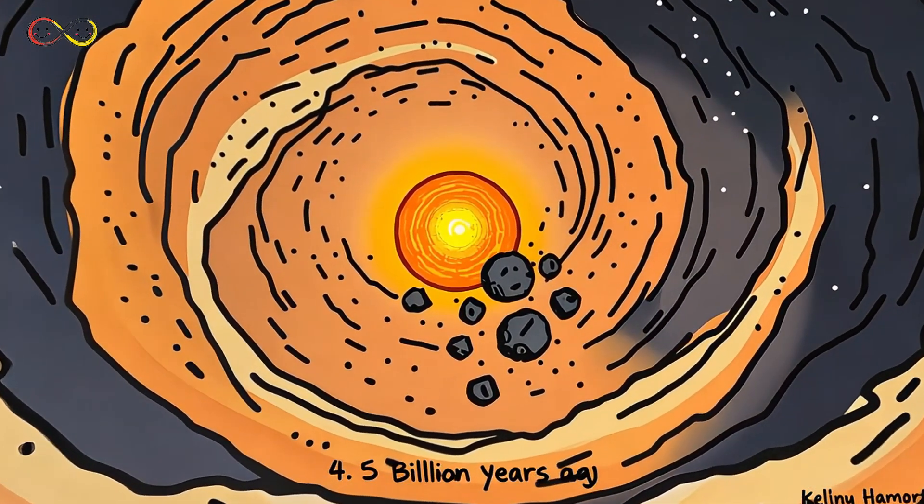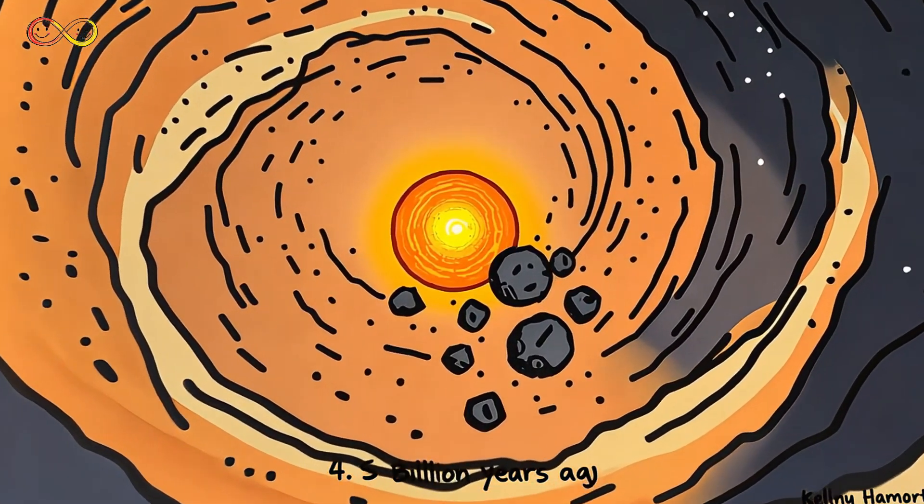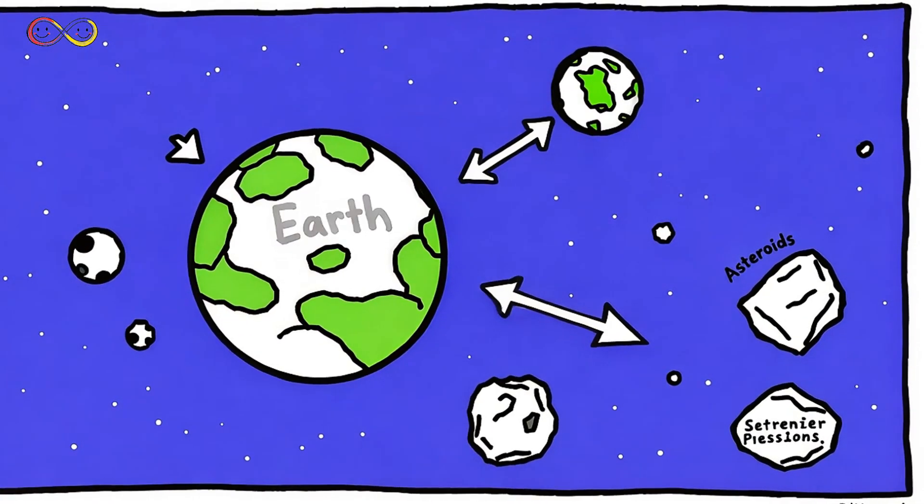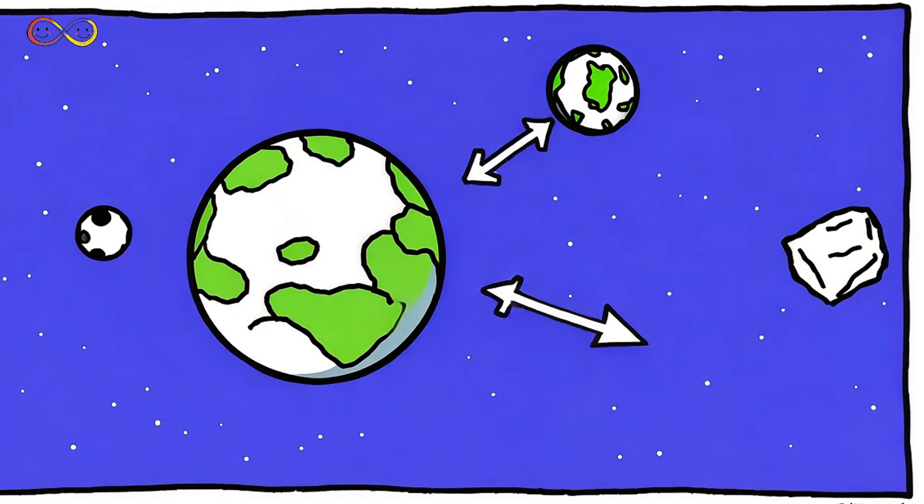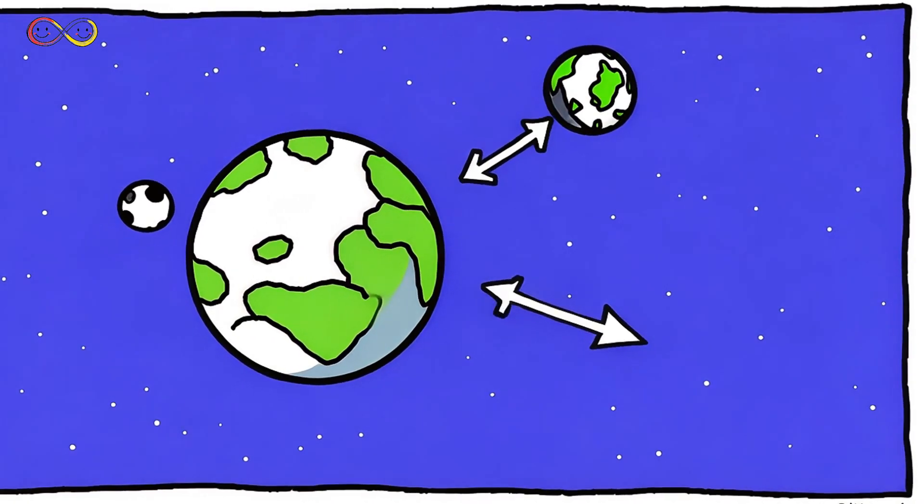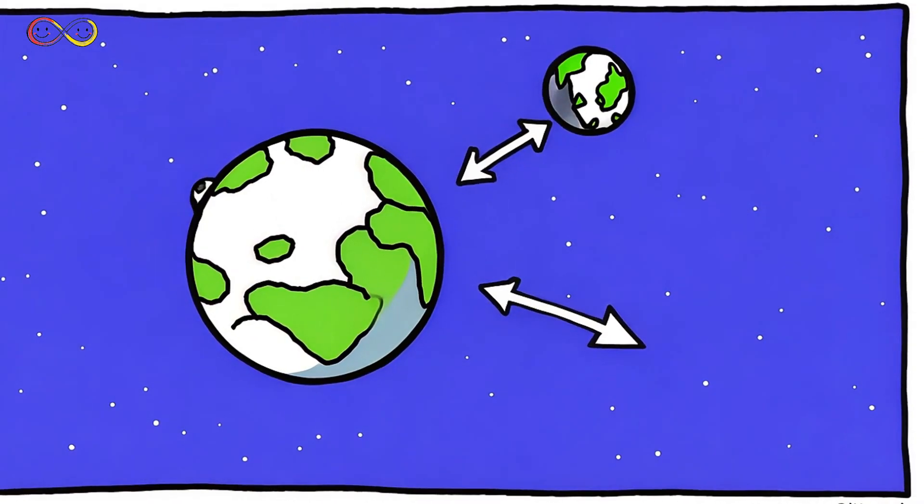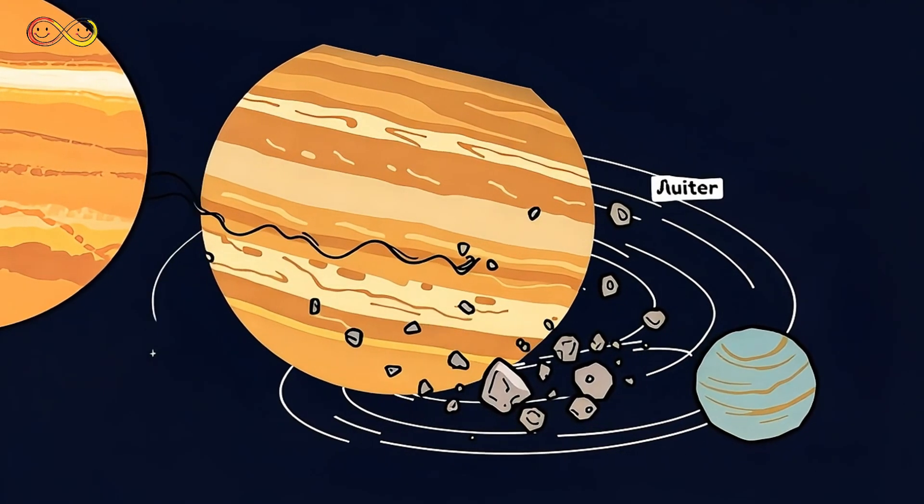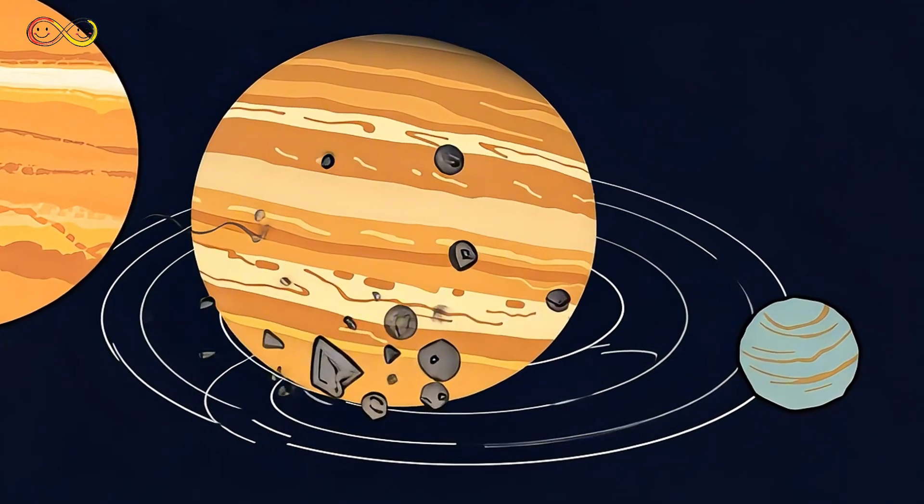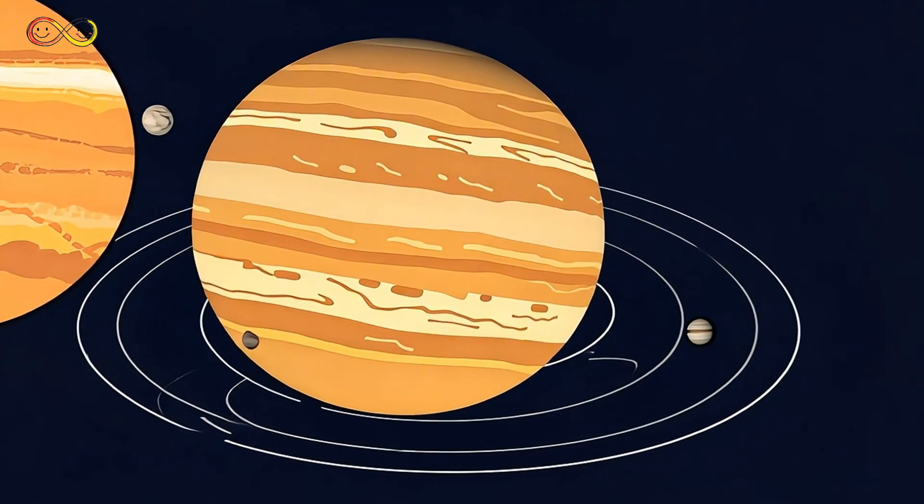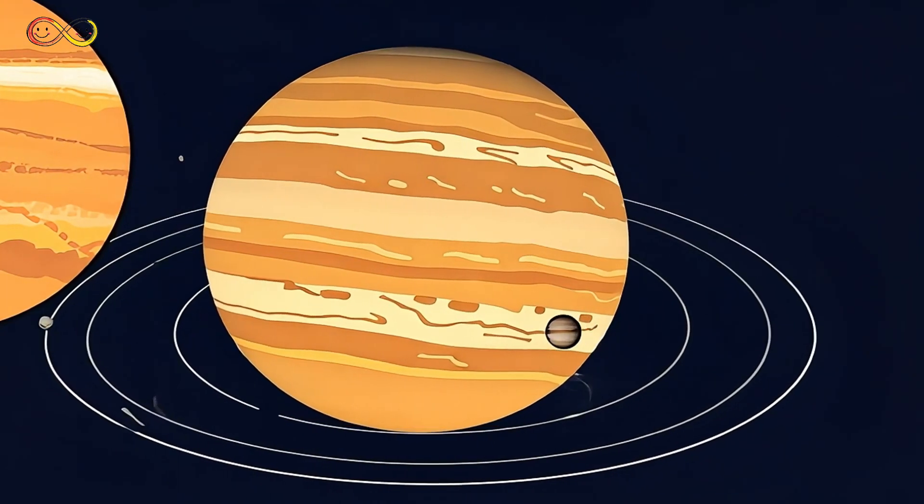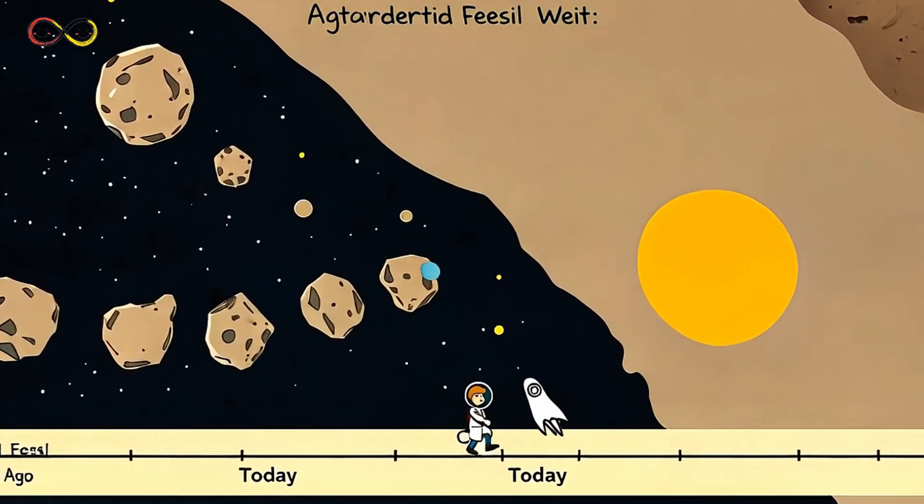Back then, the solar system was just a giant cloud of gas and dust, slowly spinning and pulling together. Over time, tiny dust grains clumped together, forming bigger and bigger rocks. Some of these grew so large that they became planets, like Earth, Mars, and Jupiter. But not everything formed a planet. Between Mars and Jupiter, something strange happened. Instead of forming a planet, the rocks stayed small. Why? Because Jupiter's massive gravity kept pulling and shaking things up, preventing a new planet from forming.